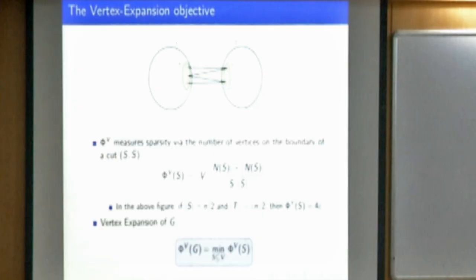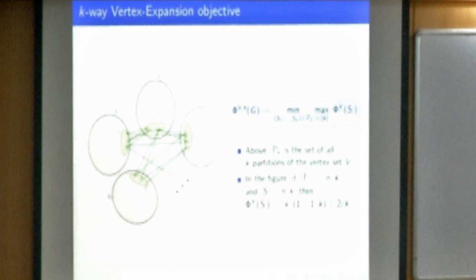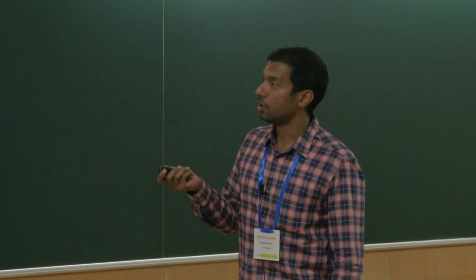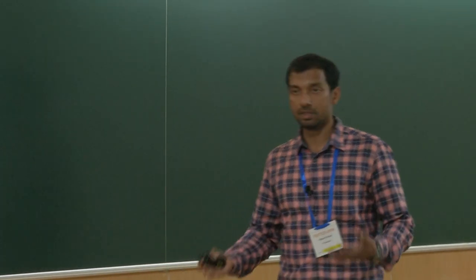Vertices on the boundary of a cut are exactly the vertices that have an edge to a vertex on the other side. What we will look at is a k-way version of this — you want to partition the vertex set into k parts, and again count the number of boundary vertices. We look at the maximum over all the parts in a particular partition of the vertex expansion of that part. Given a partition into k parts, the part with the maximum vertex expansion defines the k-way expansion objective of that partition, and when looking at a graph, you minimize this quantity over all possible k-way partitions.